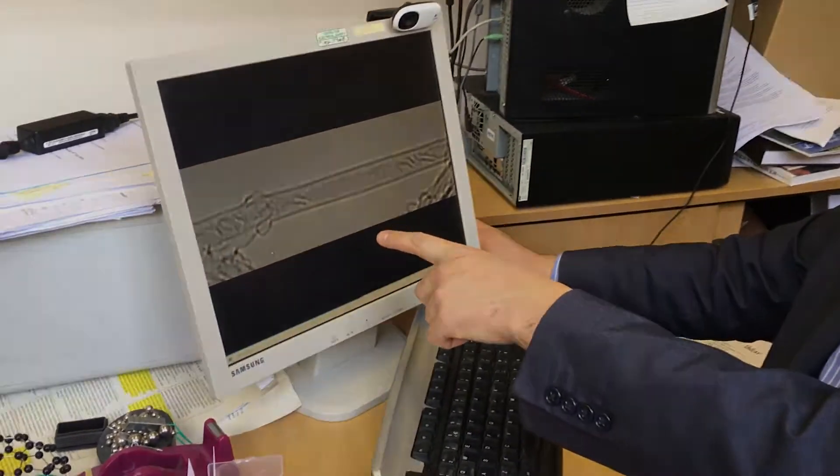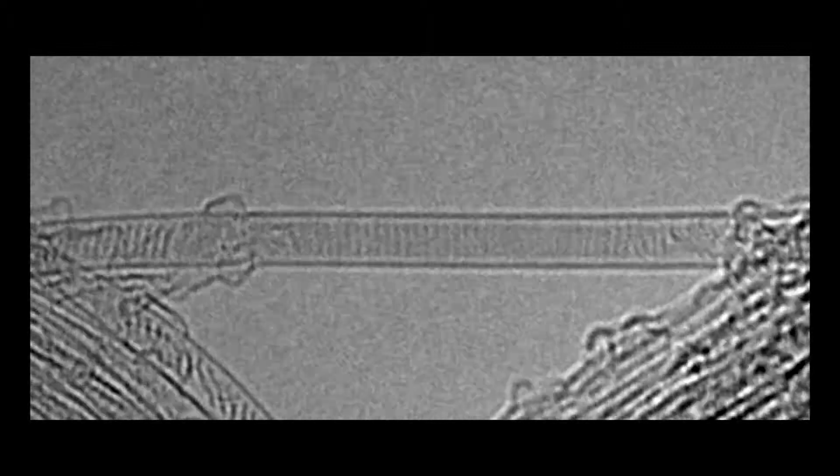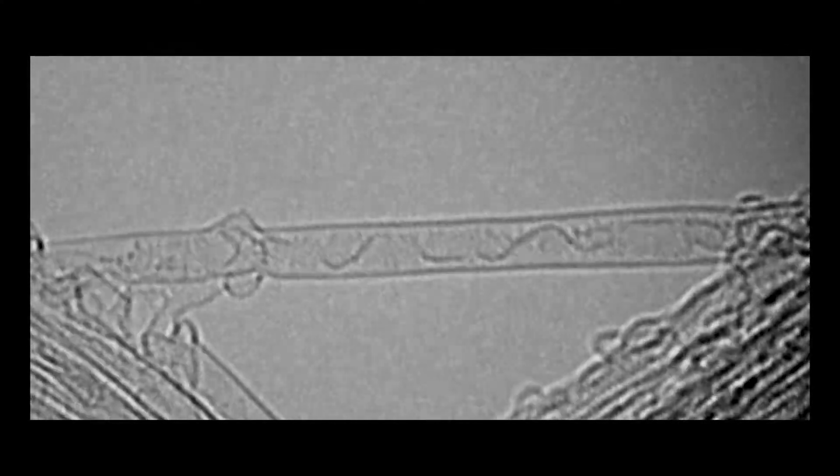They're changing their orientation, and they're forming some elongated structures after a while. You start seeing that these molecules are not perpendicular to the nanotube anymore. They form something more complex, something longer and something with a more complex structure.